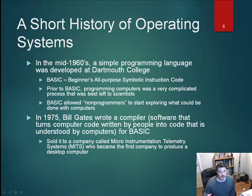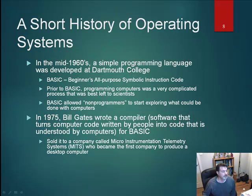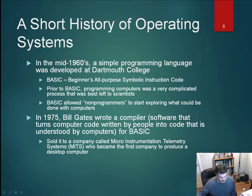BASIC was not the only important operating system to evolve in the 1960s. We'll have a lecture devoted to UNIX later along with Linux. UNIX has the distinction of being the very first multi-user operating system — it was way ahead of its time. If you look at operating systems today, you will see elements of Linux, the offshoot of UNIX, integrated into all of these operating systems including Windows.